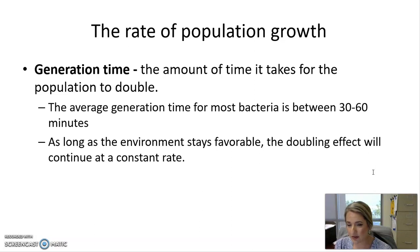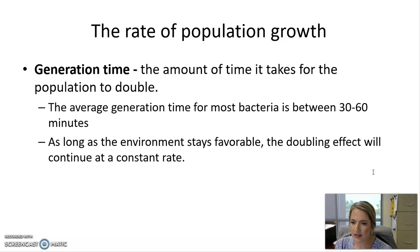For example, E. coli is a bit faster at about every 20 minutes, but something like Mycobacterium tuberculosis takes much longer. As long as the environment is stable and bacteria have access to nutrients, temperature, and pH, they will continuously go through binary fission cycles every 20, 30, or 40 minutes.